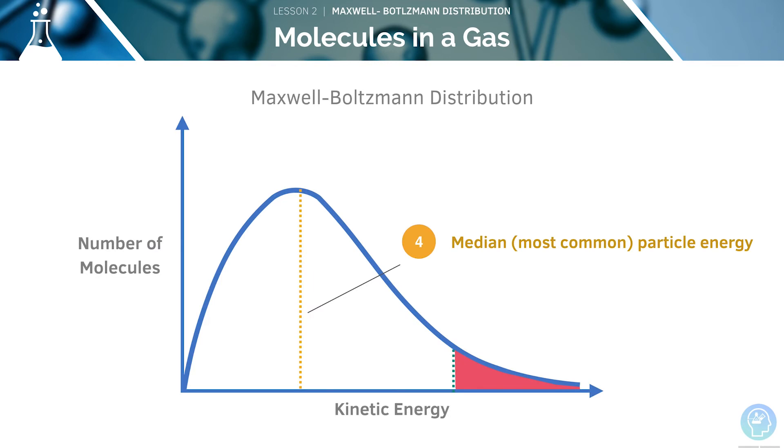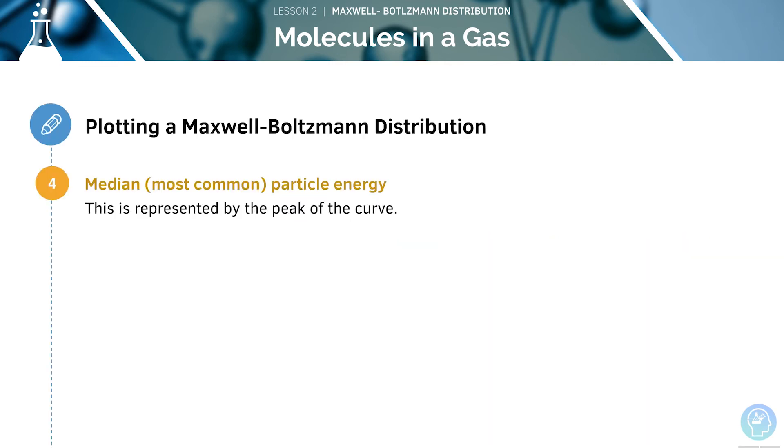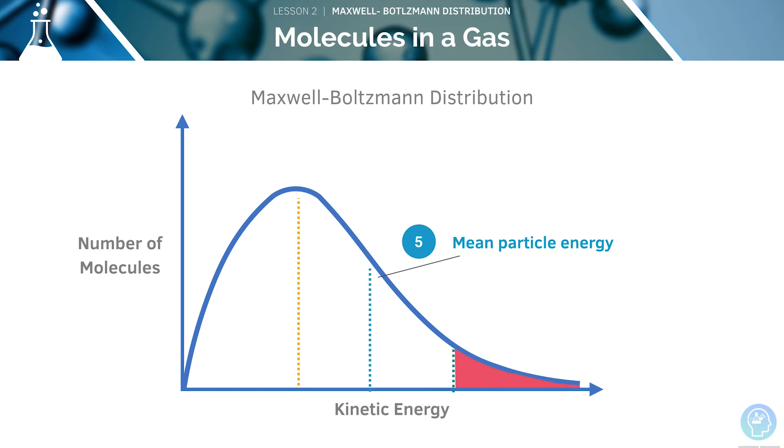The peak of the curve represents the most common energy of any single particle in the reaction. This is the mean particle energy, which is to the right of the median energy.